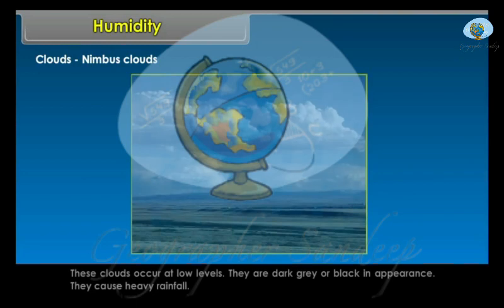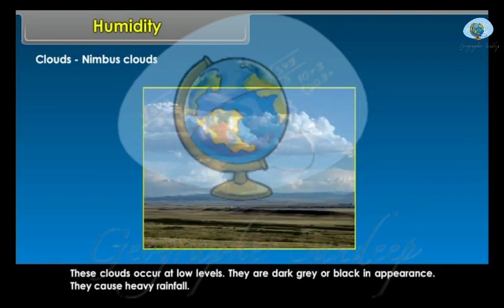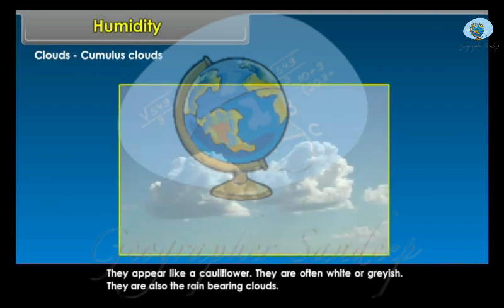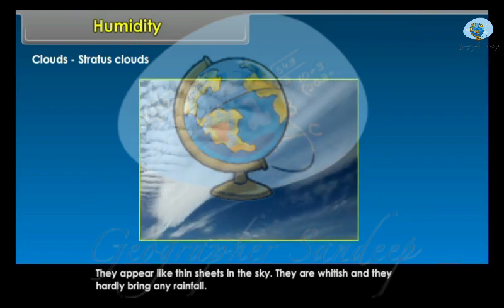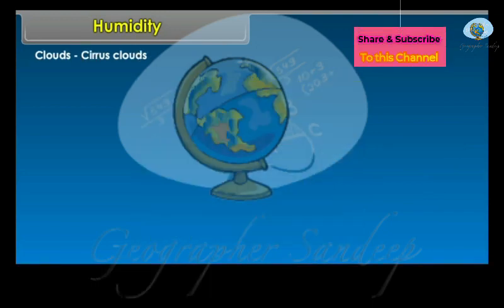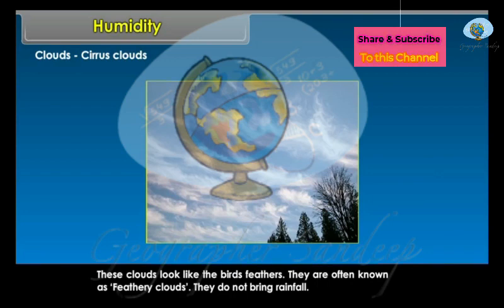Nimbus clouds occur at low levels. They are dark grey or black in appearance and cause heavy rainfall. Cumulus clouds appear like a cauliflower — they are often white or greyish and are also rain-bearing clouds. Stratus clouds appear like thin sheets in the sky — they are whitish and hardly bring any rainfall. Cirrus clouds look like bird's feathers and are often known as feathery clouds — they do not bring rainfall.